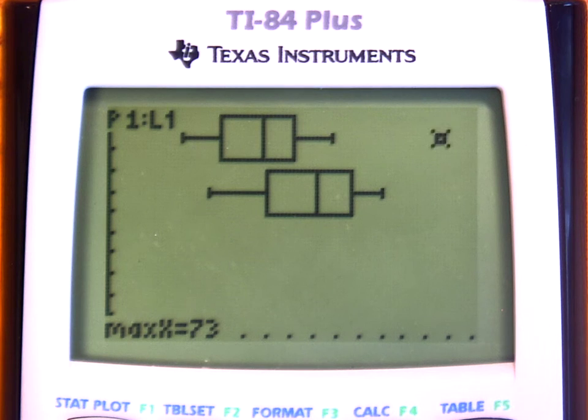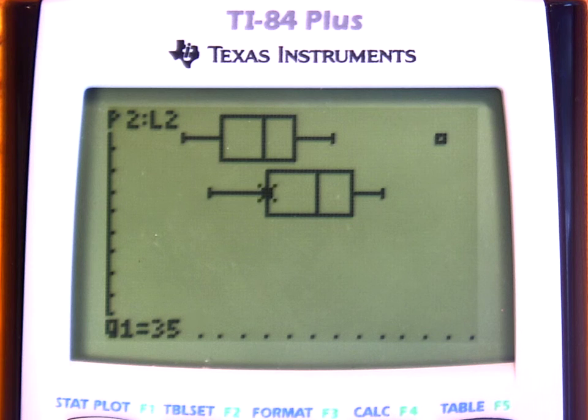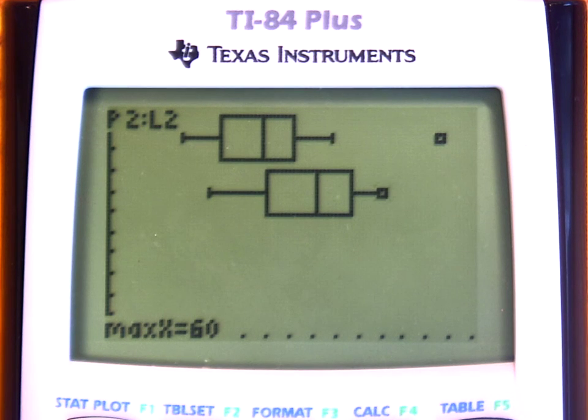So if you want to trace the other box and whisker plot, just press the down arrow. So again, pressing the right and left arrows, we can get the five-number summary off of the graph. The minimum is 22, Q1 is 35, the median is 46, Q3 is 54, and then for Babe Ruth, the maximum was 60.